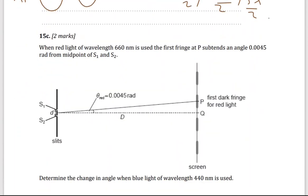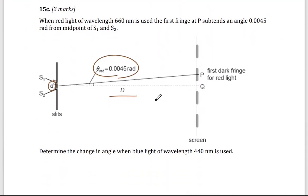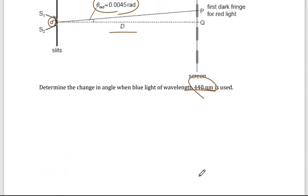Next, when red light of wavelength 660 nanometer is used, the first fringe at P subtends at an angle 0.0045 radian from midpoint of S1 and S2. So here is the angle, this is the small distance d, and this is the capital distance d between the slits and the screen determine the change in the angle when blue light of wavelength is used. So first, I have to find the angle using the red, and then the angle using the blue, and then find the difference between them.